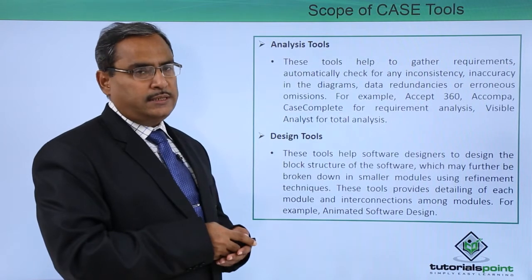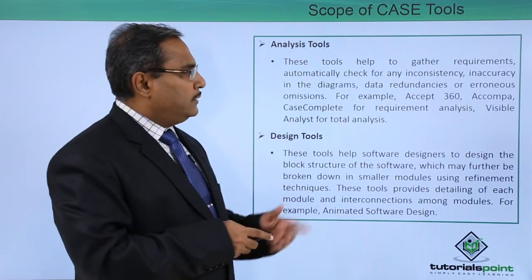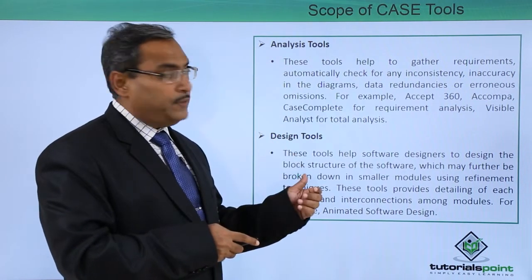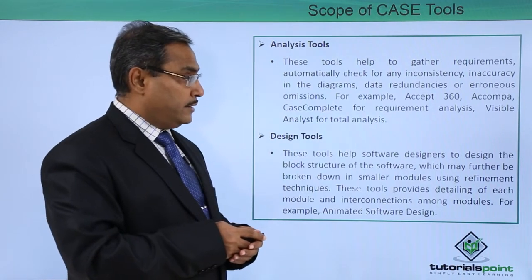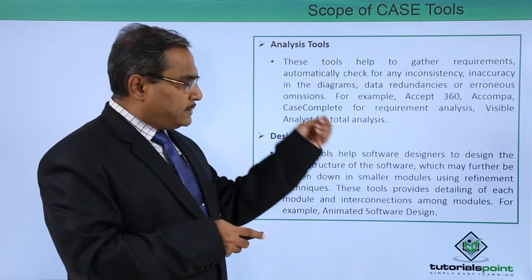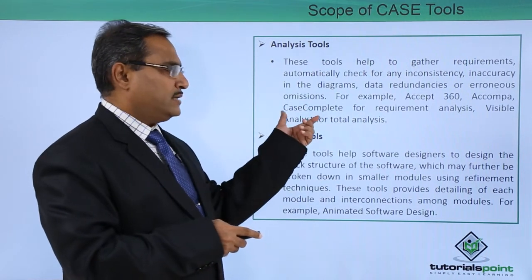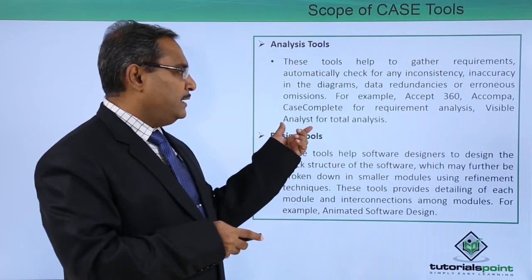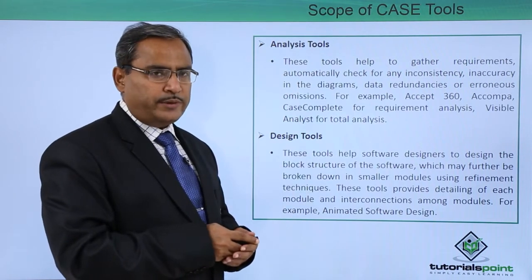Next we are going to discuss analysis tools. These tools help to gather requirements automatically, check for any inconsistency and inaccuracy in the diagrams, and also identify data redundancies or erroneous omissions. Examples include ACCEPT 360, ACOMPA CASE Complete for requirement analysis, and Visible Analyst for total analysis.